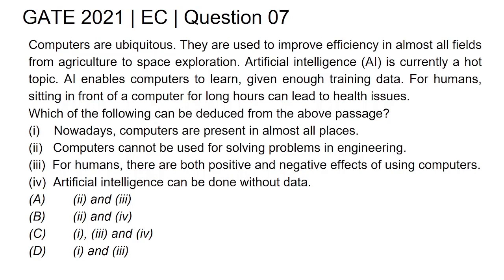For humans, sitting in front of a computer for long hours can lead to health issues. Which of the following can be deduced from the above passage? Statement 1: nowadays computers are present in almost all places. Statement 2: computers cannot be used for solving problems in engineering. Statement 3: for humans there are both positive and negative effects of using computers. Statement 4: artificial intelligence can be done without data. Options: A) second and third, B) second and fourth, C) first, third and fourth, D) first and third.